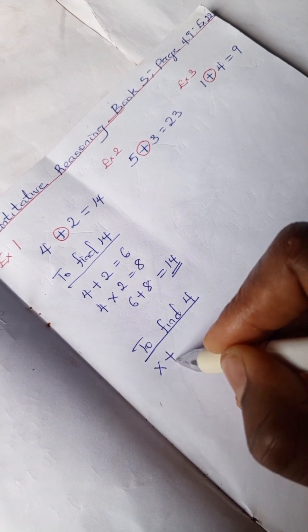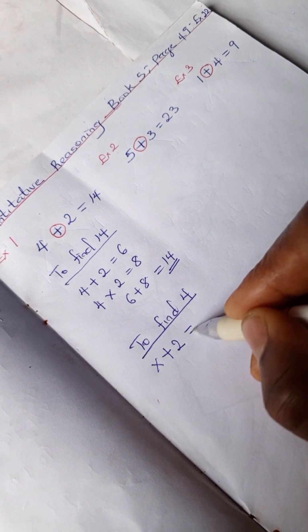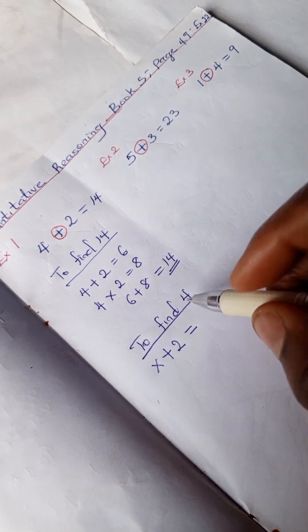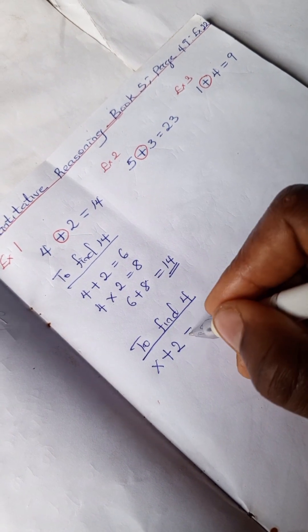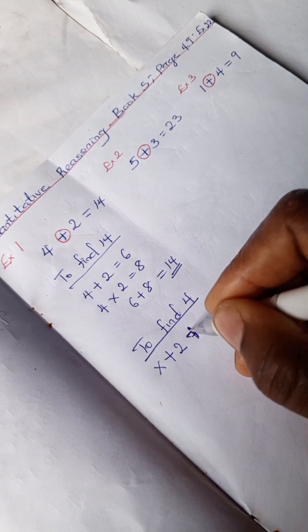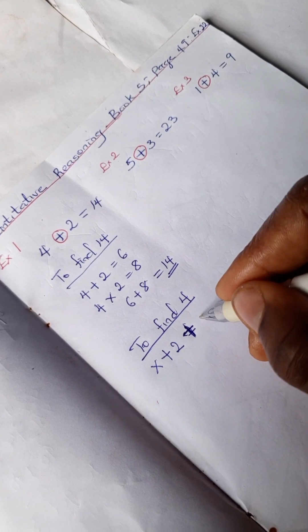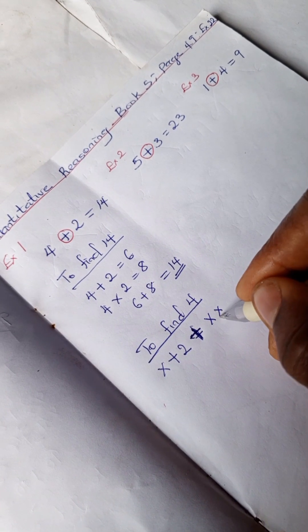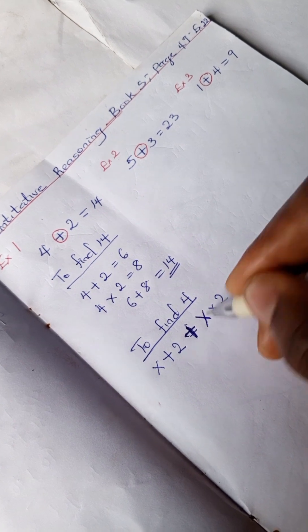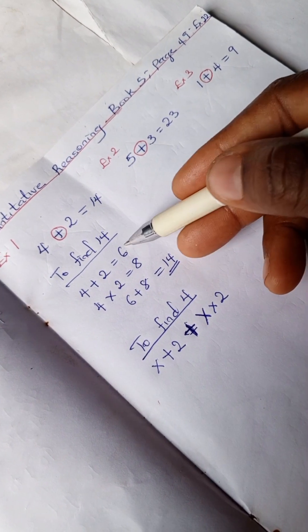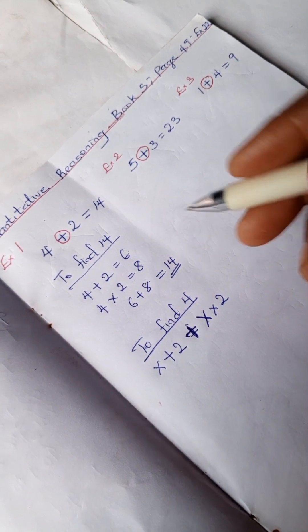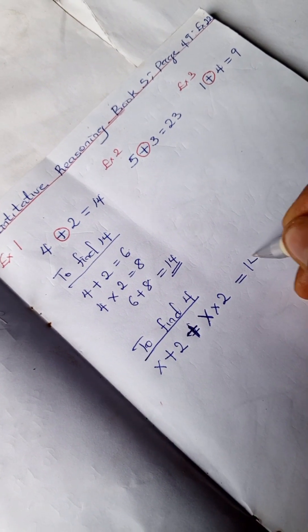So we're going to have x plus 2 plus x times 2. We added these two to get 14, which equals 14.